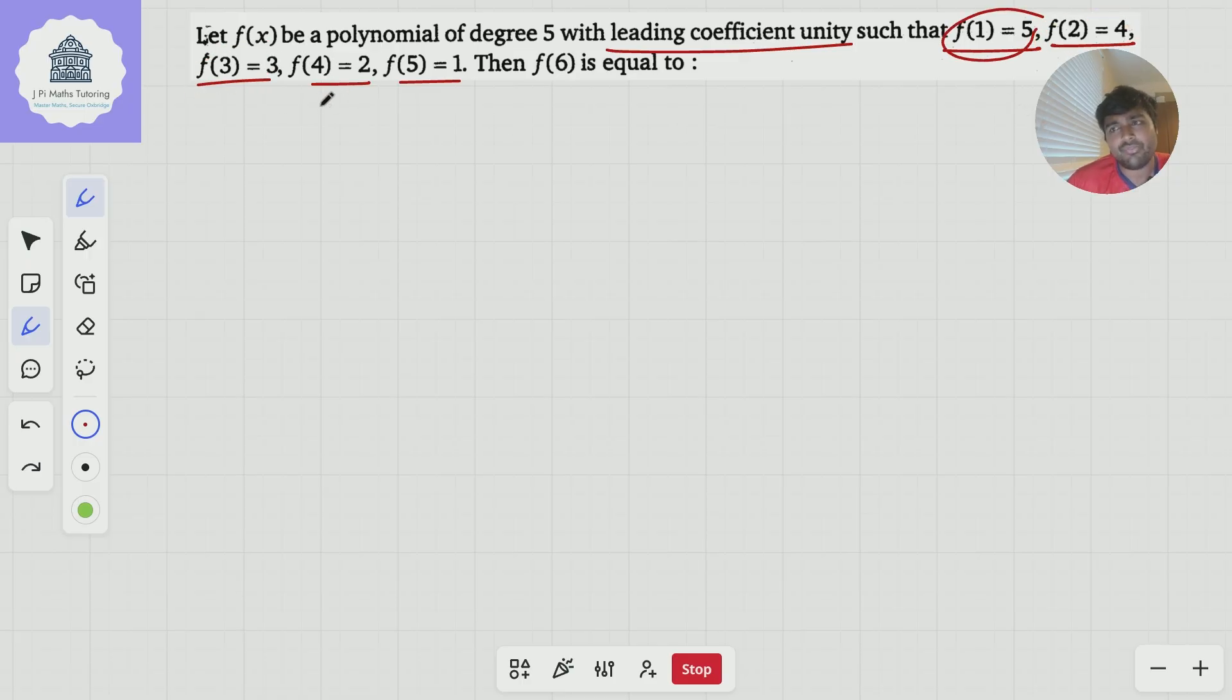We've got 1, 2, 3, 4, 5, and then the numbers on the other side, 5, 4, 3, 2, 1. Can I think of a function that satisfies that? And yes, I can. A function that is 6 minus x. That satisfies all of these three conditions here.